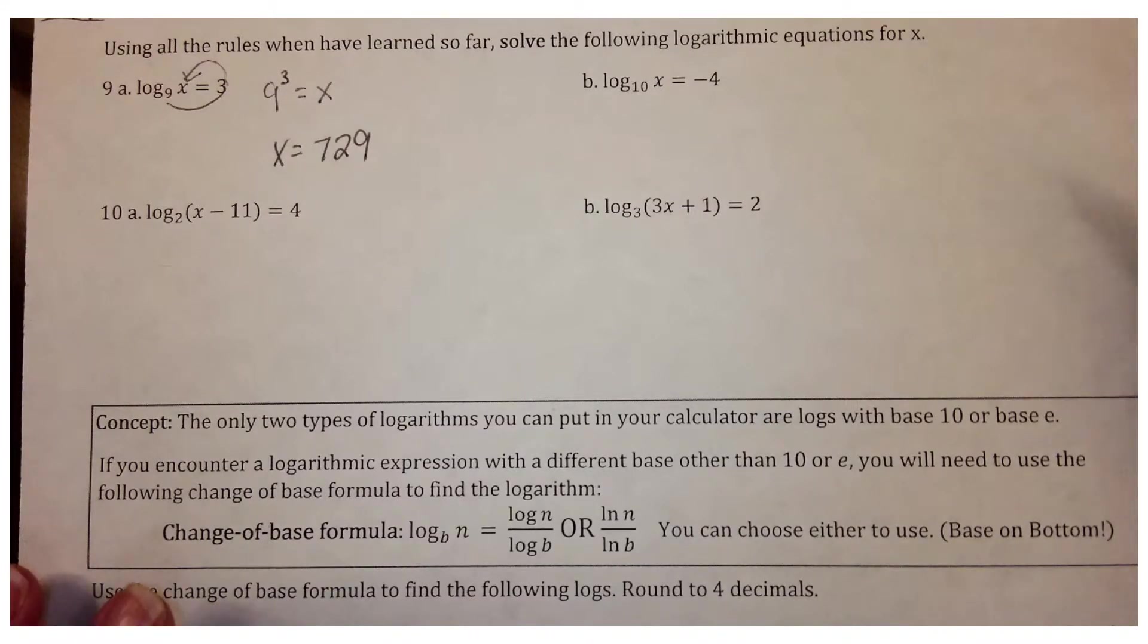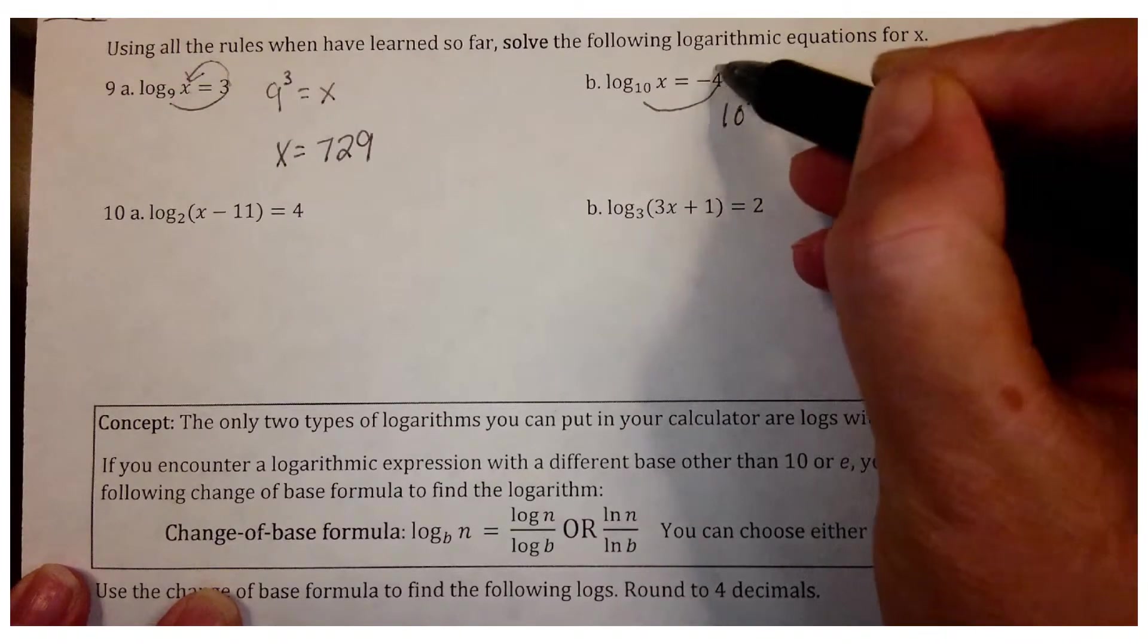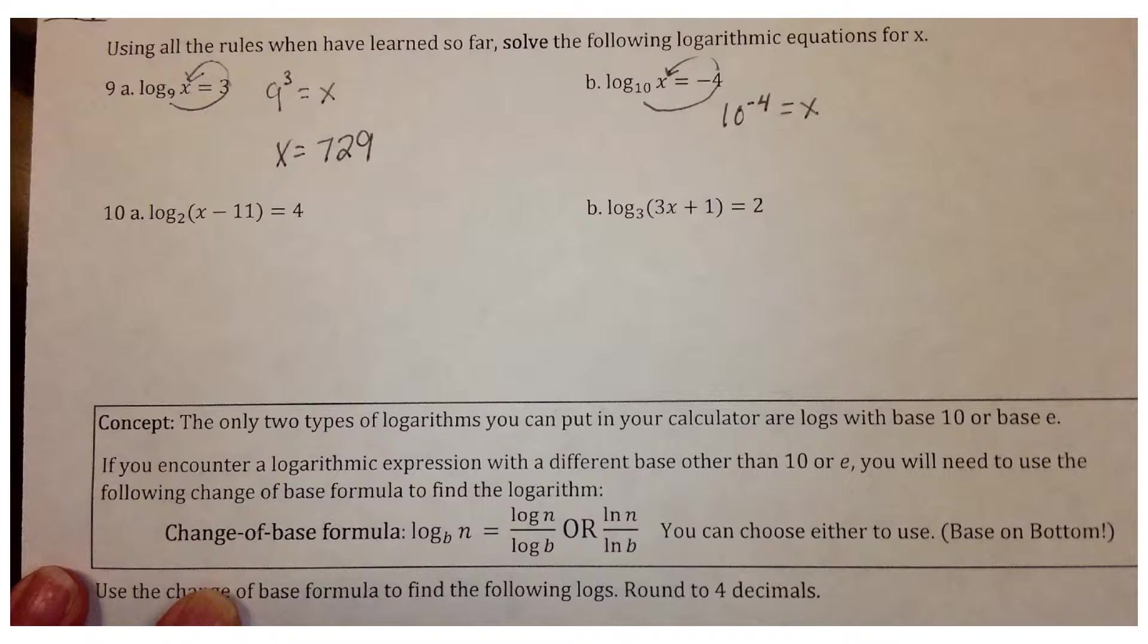Let's look at part B. We're going to do the same thing. So 10 to the negative 4 equals x. Use your calculator and you would get, there's a couple different ways you could write the answer.